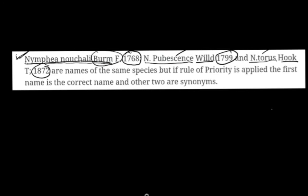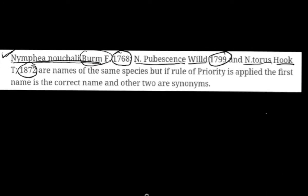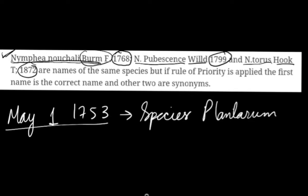Priority for vascular plants starts at May 1, 1753, because this is the date when Linnaeus's Species Plantarum was published. So any vascular plant which was published before May 1, 1753 is not considered for priority.